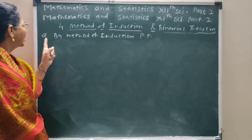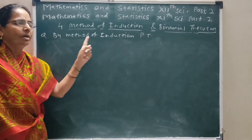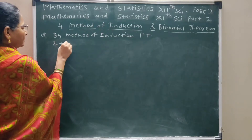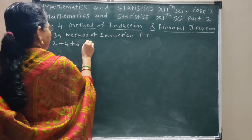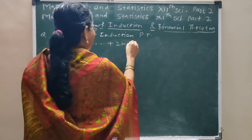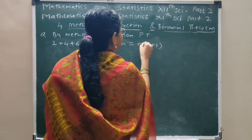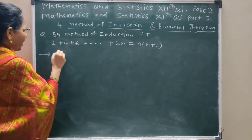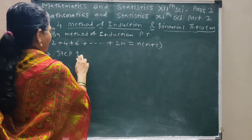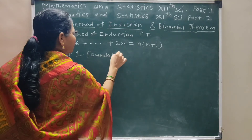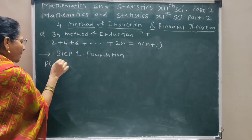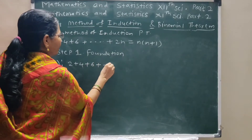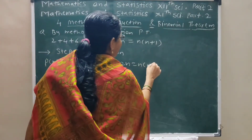Next question: prove by method of induction that 2 + 4 + 6 + ... + 2n = n(n+1). Step 1 is the foundation. P(n) is stated as: 2 + 4 + 6 + ... + 2n = n(n+1).